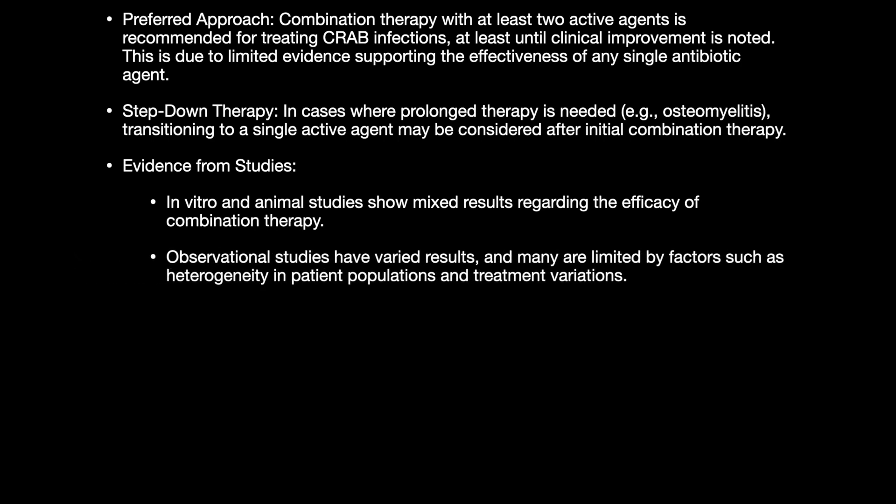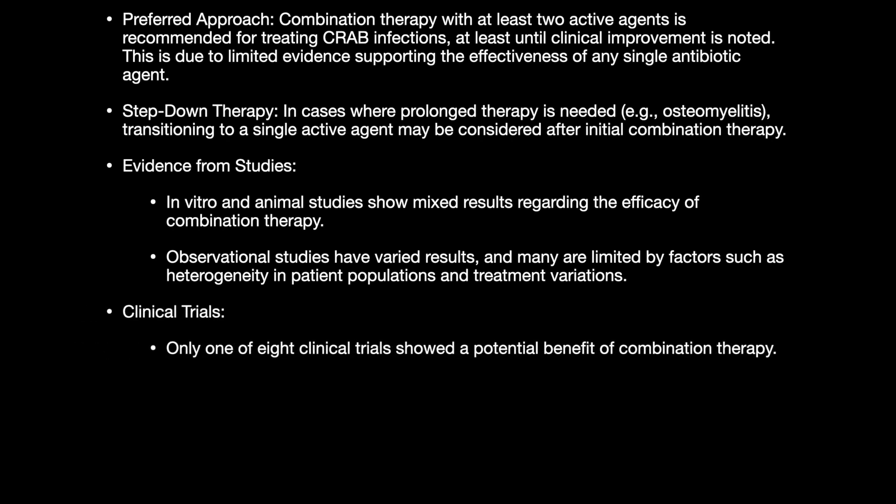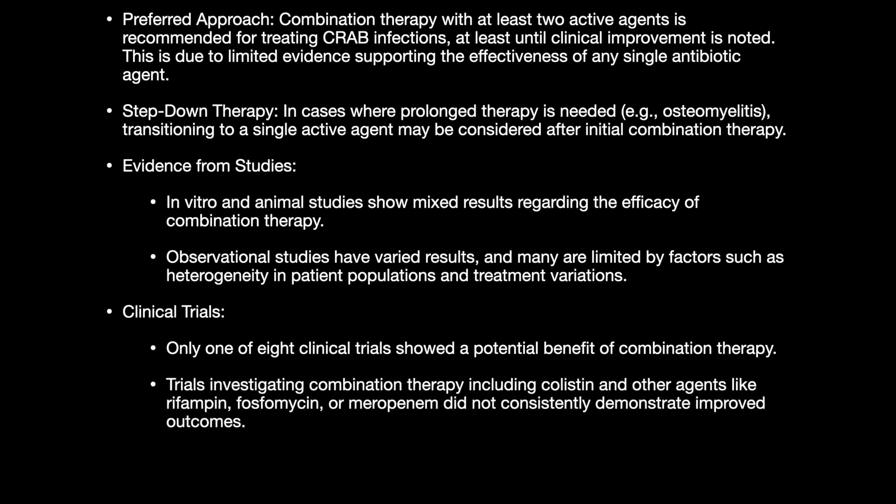Regarding evidence from studies: in vitro and animal studies show mixed results regarding the efficacy of combination therapy. Observational studies have varied results, limited by heterogeneity in patient populations and treatment variations. Regarding clinical trials, only one of eight trials showed a potential benefit of combination therapy. Trials investigating colistin combined with rifampin, fosfomycin, or meropenem did not show consistently improved outcomes.